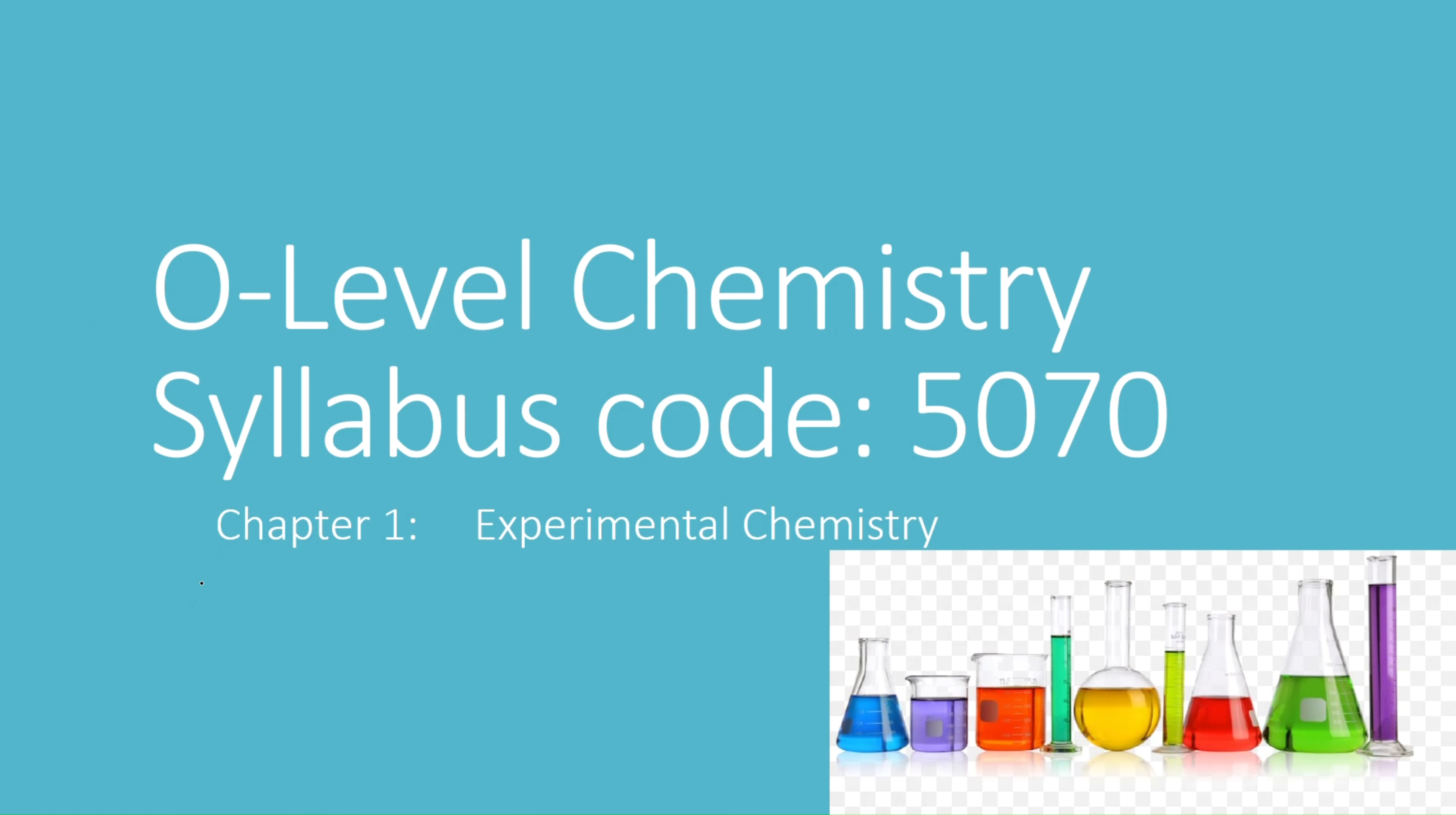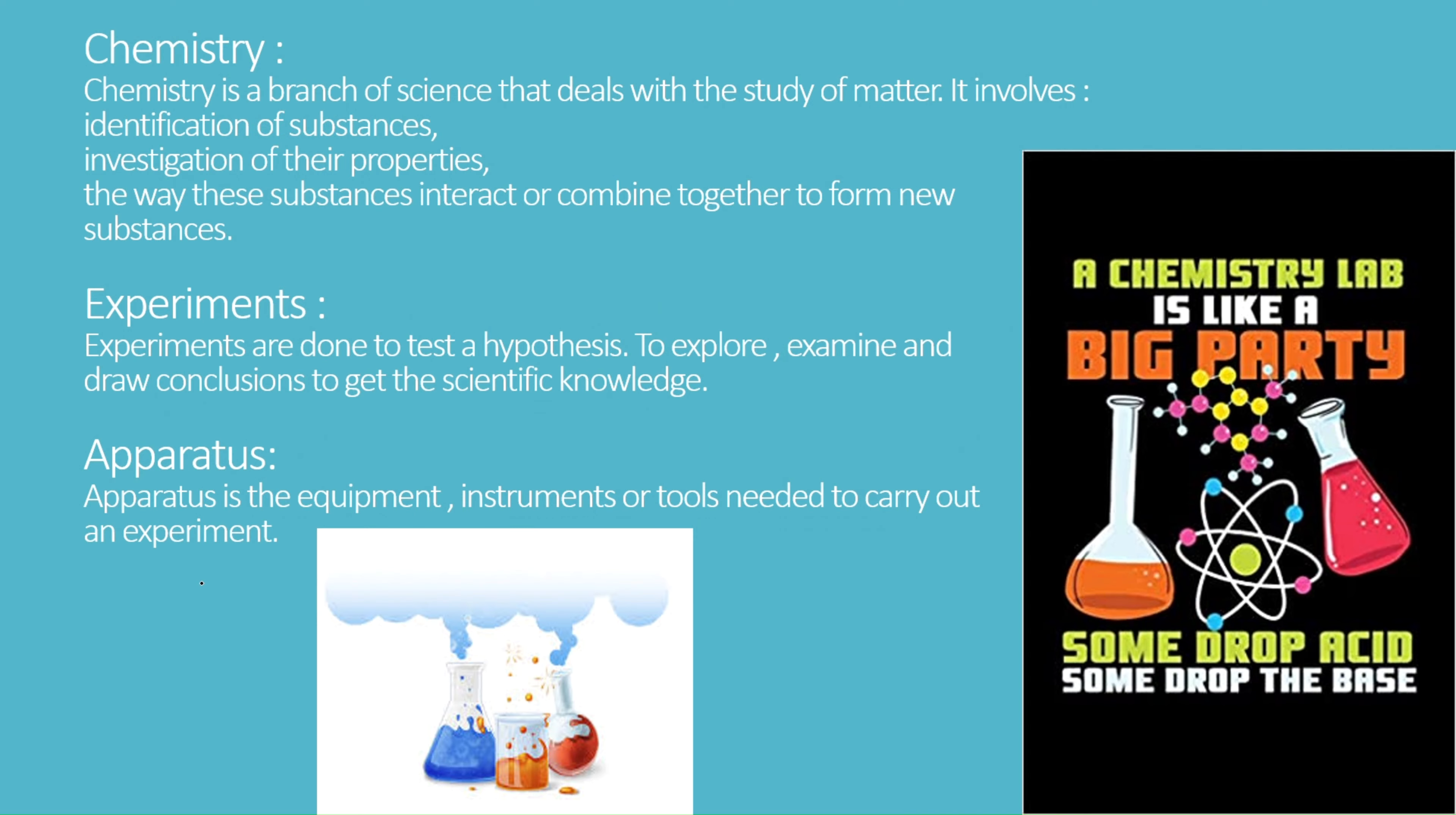Welcome to my channel Chemicate with Samina. Let's begin Chapter 1: Experimental Chemistry. Chemistry is a branch of science that deals with the study of matter. It involves identification of substances, investigation of their properties, and the way these substances interact or combine together to form new substances. Chemistry is based on experiments, and experiments are done to test a hypothesis, to explore, examine, and draw conclusions to get scientific knowledge.